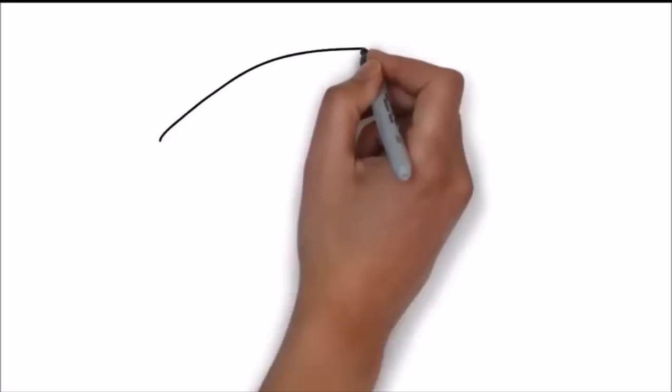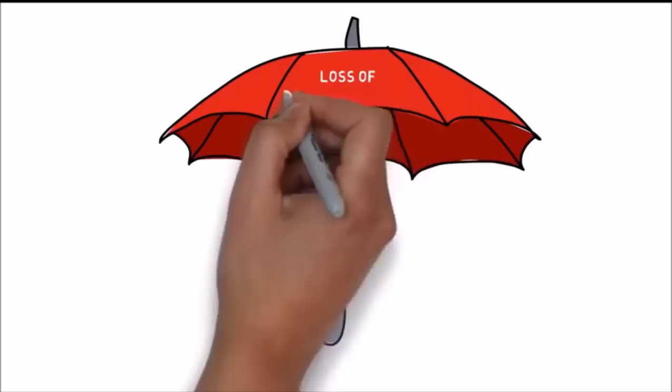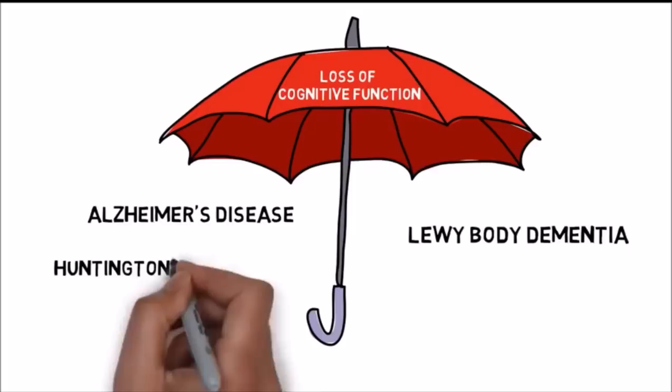Dementia is an umbrella term for the loss of cognitive function associated with a number of neurological conditions such as Alzheimer's disease, Lewy body dementia, Huntington's disease and traumatic brain injury.